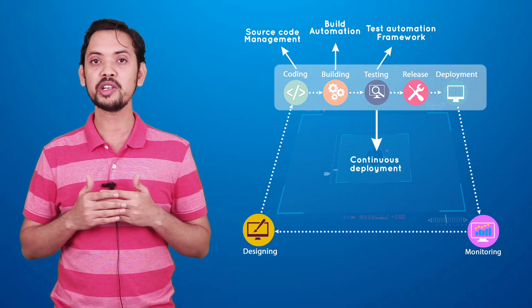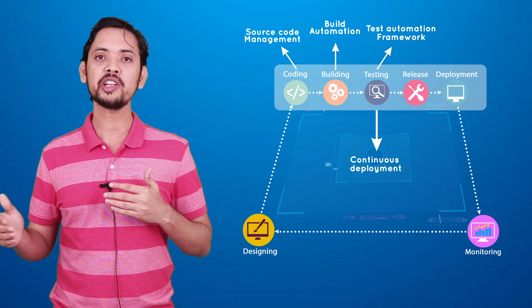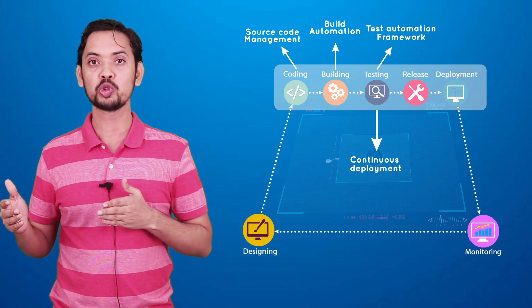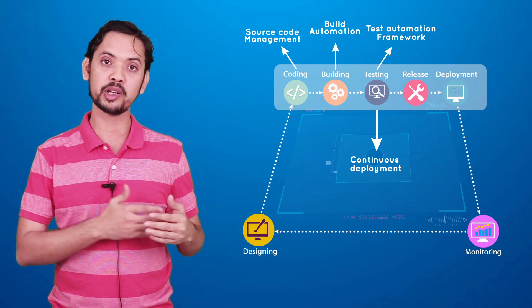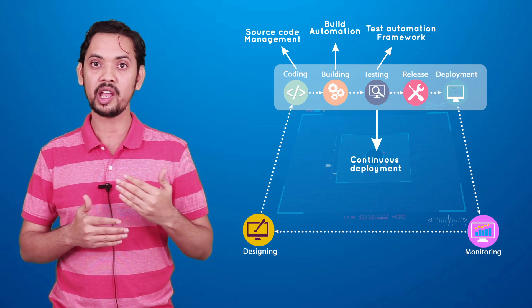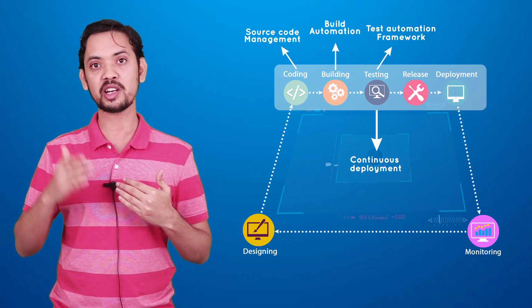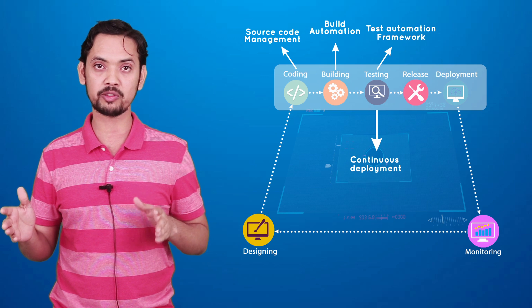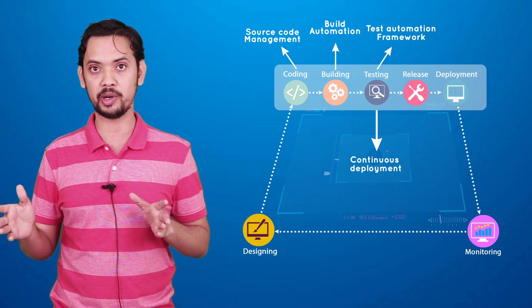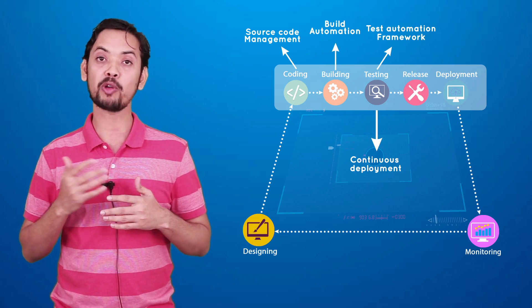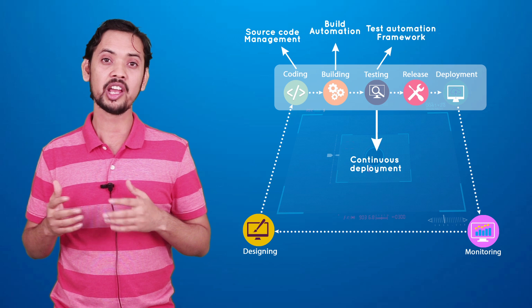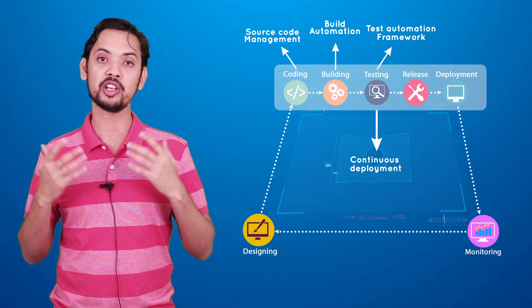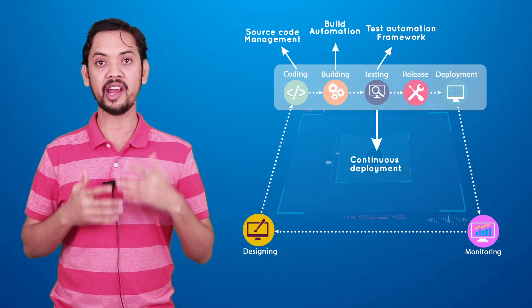Continuous deployment is one step ahead of continuous delivery. In continuous deployment, you not only release the code but also deploy it to the production server automatically. The developer pushes code, and the entire compilation, testing, release, and deployment process happens with no manual intervention — that is continuous deployment. This may look utopian, but it is the ultimate vision for bringing DevOps culture into an organization, and this is what you should strive for.